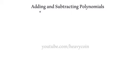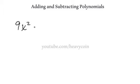In this section we're going to be talking about adding and subtracting polynomials. But first, let's talk about some definitions and examine what a polynomial is. I'll start by writing a polynomial out: 9x squared plus 4x minus 7. This is a polynomial.